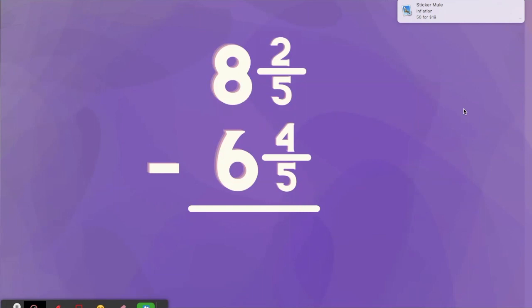But we learned from the other video when we subtract whole numbers, we want to subtract the fractions first and then the whole numbers. And when we get started, we see we've got two-fifths minus four-fifths. Well, we can't do that. Two-fifths is not enough to subtract four-fifths from. We're going to have to borrow, just like you do with whole numbers.